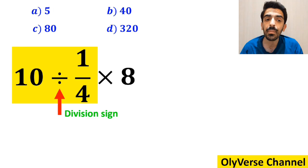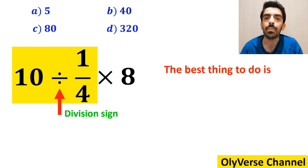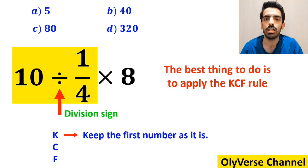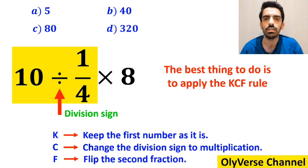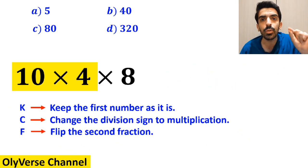Okay, whenever we come across a division sign between two terms, the best thing to do is to apply the KCF rule. In this rule, K stands for keep the first number as it is, C stands for change the division sign to multiplication, and F stands for flip the second fraction. So, we remove the highlighted part and replace it with 10 multiplied by 4.